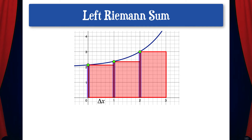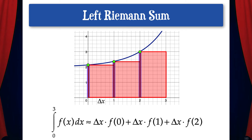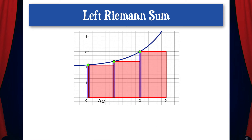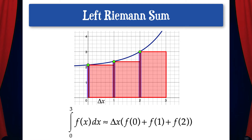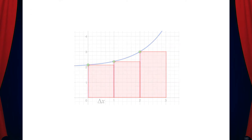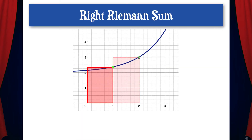So the definite integral from 0 to 3 is approximately equal to delta x times f of 0, plus delta x times f of 1, plus delta x times f of 2. And since delta x is common to each term, we can factor it out to clean up the equation.